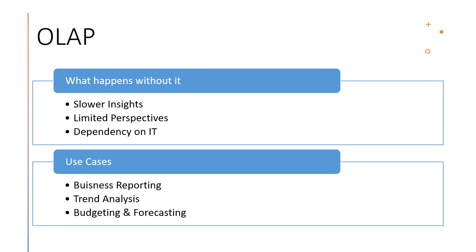Moreover, OLAP doesn't impact the transaction system. But if you try to run analytical queries on a transactional database, of course you will get results, but it will hamper the performance — so, slower insights. Then there's limited perspective: without the ability to slice and dice data, businesses might miss out on key insights. Data comes from so many sources — somebody says 'USA' and another data source says 'United States of America.' Somebody uses a sign, somebody uses the name. Things will not be clear and perspective would be limited.